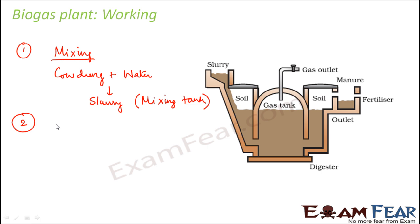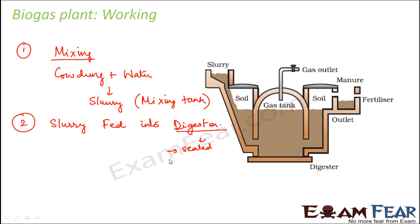In the next step, slurry is fed into the digester, which is a sealed chamber with no oxygen. Therefore only anaerobic organisms can perform their job here. The methanogens are anaerobic organisms — they do not need oxygen — so they break down the composition of the slurry.